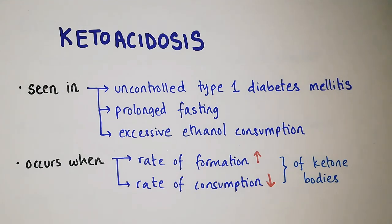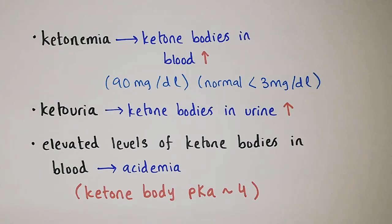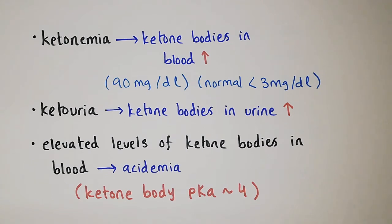Ketoacidosis occurs when the rate of formation of ketone bodies is greater than the rate of consumption. If formation exceeds consumption, the concentration of ketone bodies will increase in our blood — this is called ketonemia. Normally, ketone bodies are approximately 3 mg per deciliter, but in ketoacidosis, this amount increases to 90 mg per deciliter.